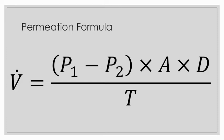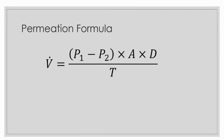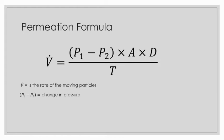So how do we find out how much permeation occurs between each material? Fick's law can be used to find the amount of permeation in each material. In Fick's law, V̇ represents the rate of the moving particles, P₁ minus P₂ is the change in pressure, A